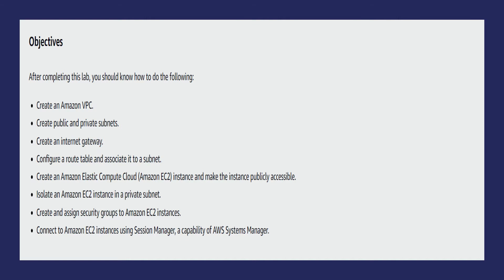We will cover the following objectives in this hands-on lab: creating an Amazon VPC; creating public and private subnets; creating an internet gateway and configuring a route table; associating it with the subnet; creating an Amazon EC2 instance and making it publicly accessible; creating an isolated EC2 instance in the private subnet; assigning a security group to an EC2 instance; and connecting to the EC2 instance using Session Manager, a capability of AWS Systems Manager.